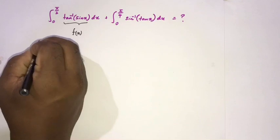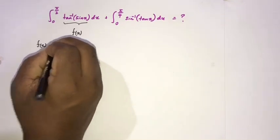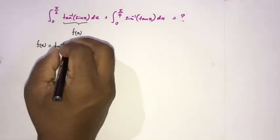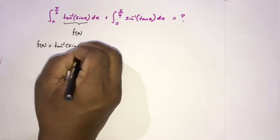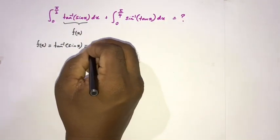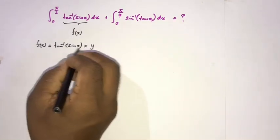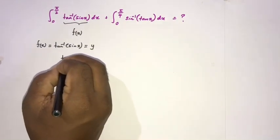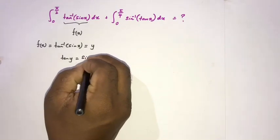First of all, I am going to take this part is equal to f(x). So we can write f(x) is equal to inverse tan of sine of x, and I am going to take this is also equal to y.